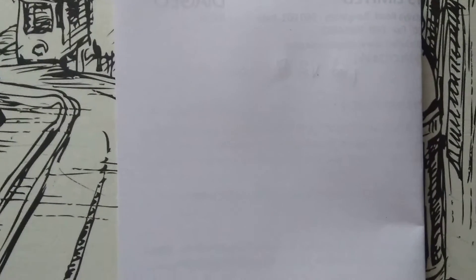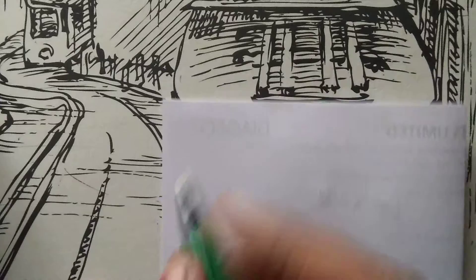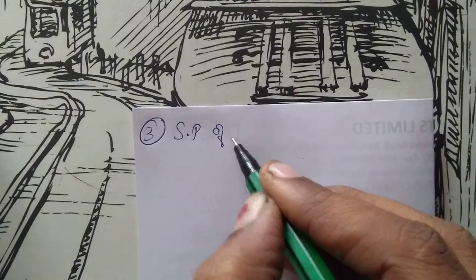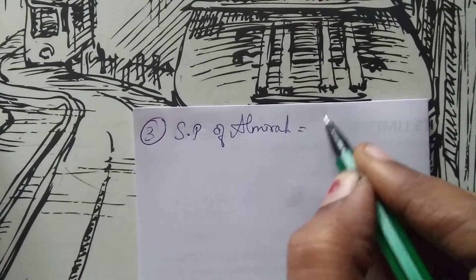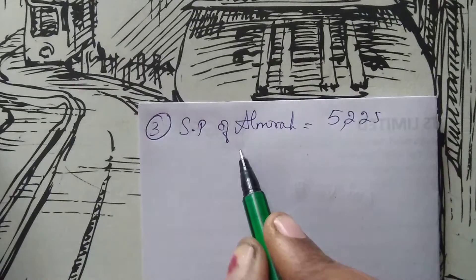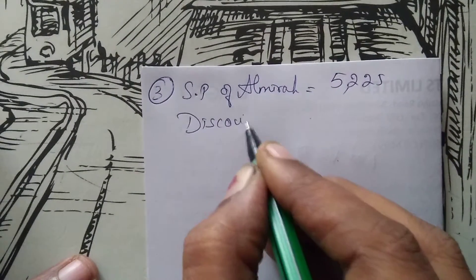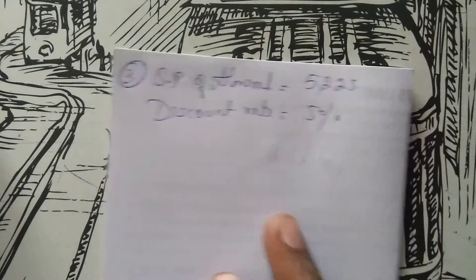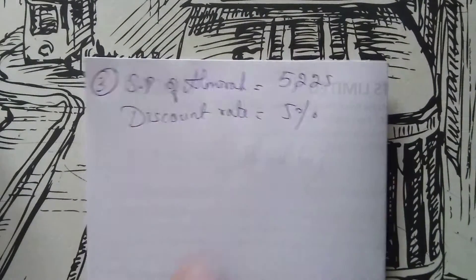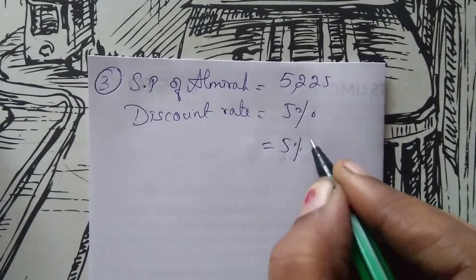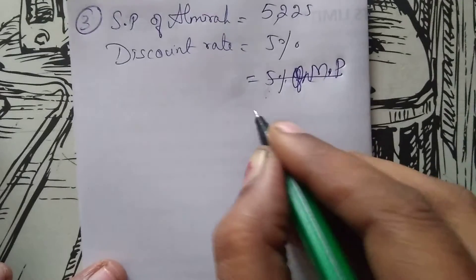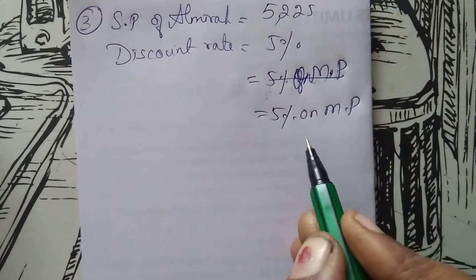An Almira's selling price is given as 5,225. Discount rate is 5%. Normally discount rate is given as 5% of marked price. So we write this as 5% on marked price — 5% on marked price is the discount given.